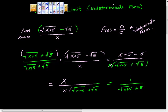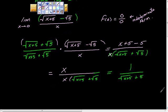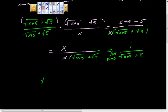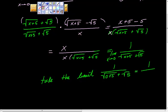And remember, if you go back to the beginning, we were taking the limit as x goes to 0. We're going to take that limit, and we'll get 1 over the √(0+5) + √5, which is equal to 1 over 2√5.